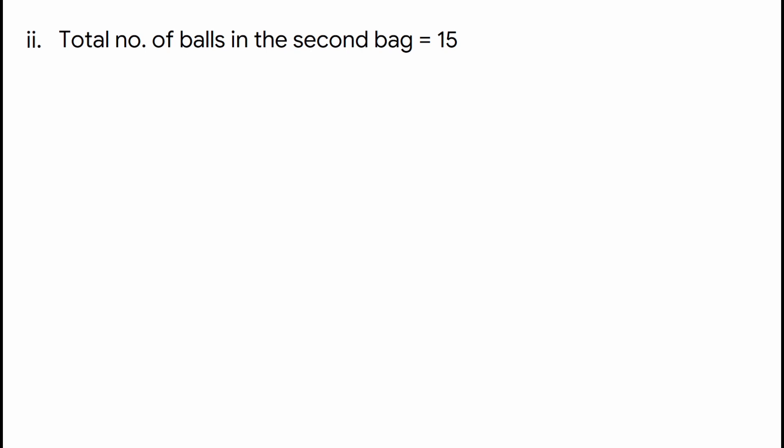For the second bag, the probability of red balls is calculated as the number of red balls divided by the total number of balls, which gives us 8 by 15. The probability of red balls from the second bag is equal to 8 by 15.